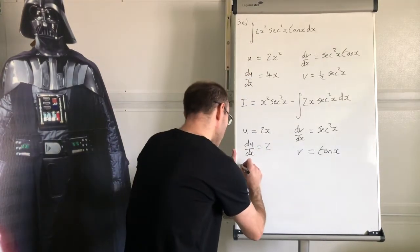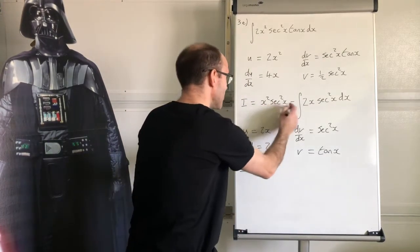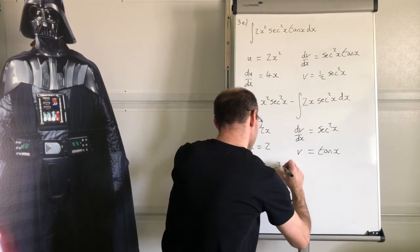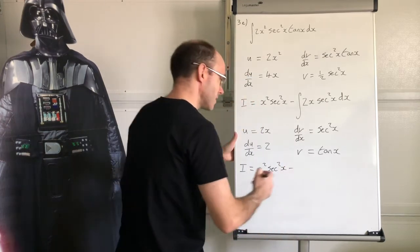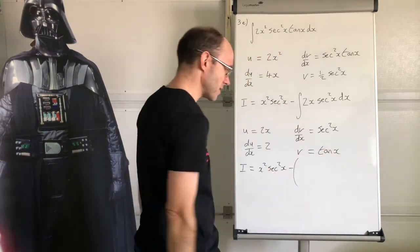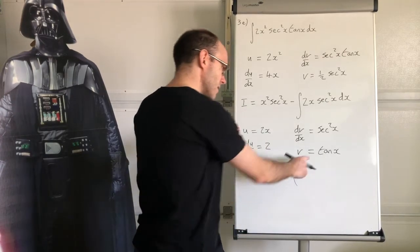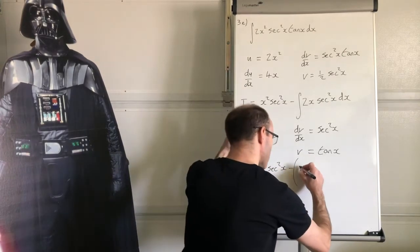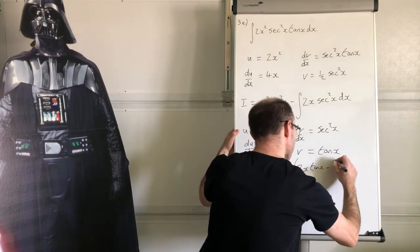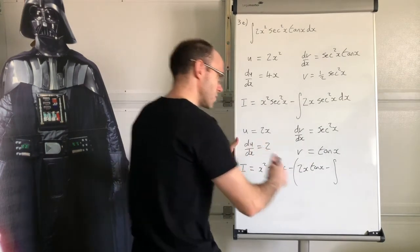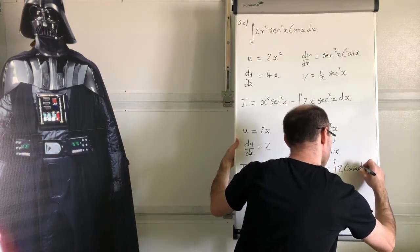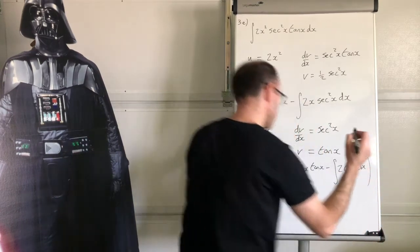So now our integral becomes, and this, remember, it's part of our final answer, x squared sec squared x. And then subtract. Now, as I've said before when I've done this, put the rest of it in brackets so you don't make a mistake. So you're going to have uv, that times that, so that's 2x tan x. And then subtract integral of v du/dx. So 2 tan x dx. And let's just close the bracket.